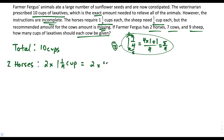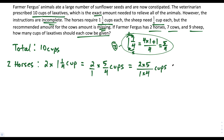So we can do 2 times 5/4, and that's going to tell us how many cups the horses need. I would rewrite 2 as 2/1, because when we multiply fractions we multiply the numerators and the denominators. So we have 2 times 5 over 1 times 4, which gives us 10/4 cups. We can reduce by dividing top and bottom by 2, giving us 5/2 cups.